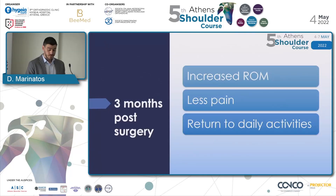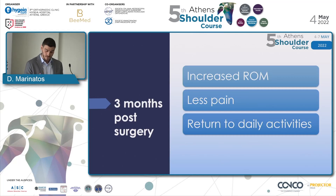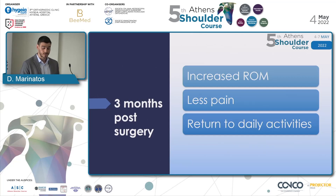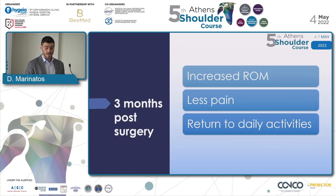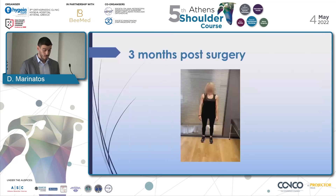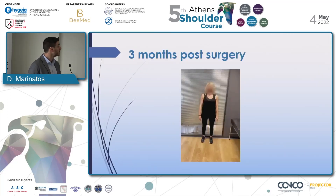After three months, her range of motion had increased — forward flexion from 100 degrees to 160 degrees, abduction to 160 degrees, external rotation at 40 degrees, and internal rotation to thoracic 12. The patient was feeling less pain than before and was able to do her daily activities with more ease. Here is the video of three months post-surgery.